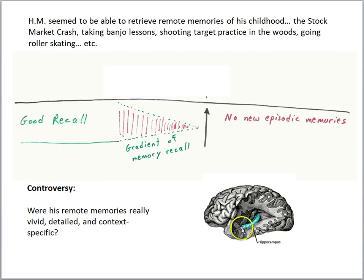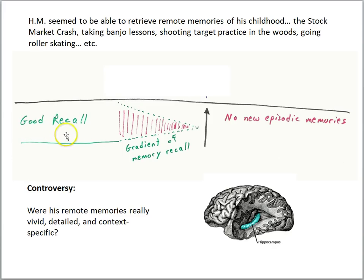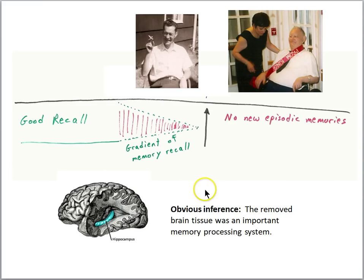This was important because if he really was retrieving vivid episodic memories from his past, it meant those remote memories no longer needed the hippocampus to retrieve them. But if those memories were not genuine episodic memories — if they were more general, less detailed, more semantic versions — then it meant the hippocampus was still needed for vivid episodic recall. What HM could do was recall semantic versions of life events, but not vivid episodic memories. This controversy raised important questions about exactly what the hippocampal system does in memory processing.